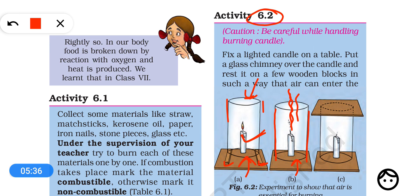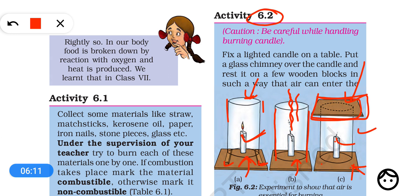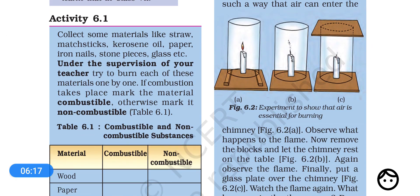In the third case, the chimney is placed directly on the bottom and covered with a plate on top, so air can neither enter from above nor below. The candle burns and consumes all the oxygen. Once the air supply is cut, there is no oxygen, and when you put the plate on, the candle stops burning. From this activity, we see that for burning, enough oxygen is very important.